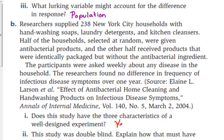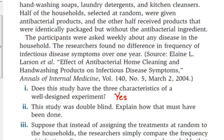Okay, so yes, we've got the three characteristics. It says this study was double-blind, so we know that the households don't know because the packages and products were identified identically. One had the product, one did not have the product.